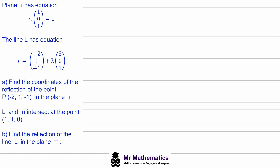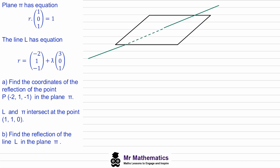In our first example we've been given the equation of this plane in scalar product form and the equation of a line in parametric form. We've been asked to find the coordinates of the reflection of point P, where this is the position vector in the plane. When we have questions like this, the first thing we need to do is sketch a diagram. We've got our plane pi and the line passing through it. The line has the equation with position vector negative two, one, and negative one, with parameter and direction vector three, zero, and one — we'll call this line l1 — and the plane has this equation in scalar product form.